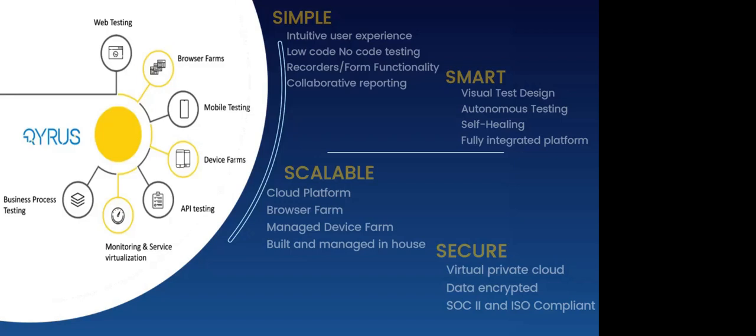Our next pillar is scalability. It's essential that as your application scales, so does your testing solution. Kairos being a cloud-based platform with added infrastructure requirements, scalability becomes a no-brainer. You can actually scale up and down at any given time — and that includes browsers, devices, as well as licenses. Not only can you scale your licenses by adding and removing them, but you can also edit them at any point. So if there's a change in team members, you can always alter those licenses to reflect a different user.